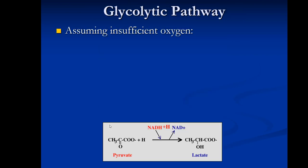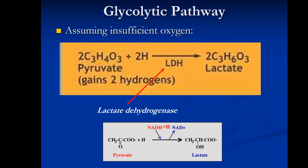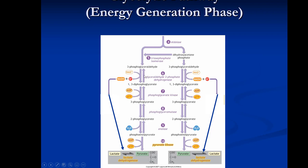Assuming insufficient oxygen, pyruvate is converted to lactate. The enzyme is called lactate dehydrogenase. Pyruvate is converted to lactate as hydrogens are donated from NADH — the NAD molecule acts like a shuttle that transports hydrogens back and forth within the glycolytic pathway.